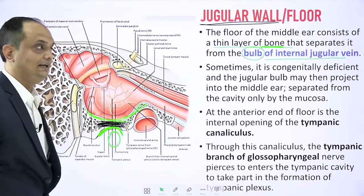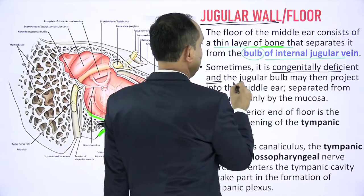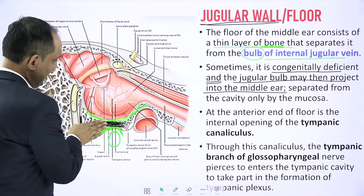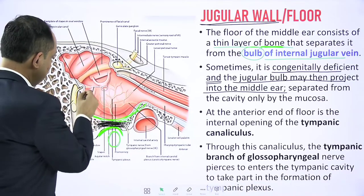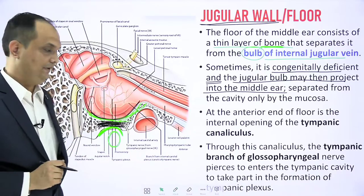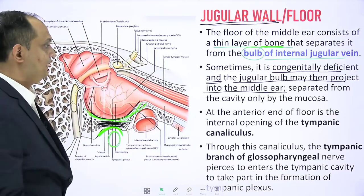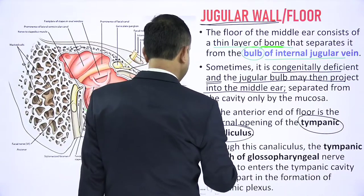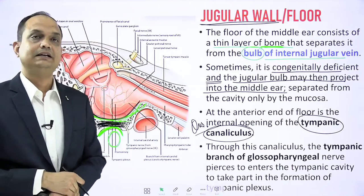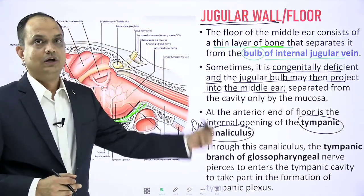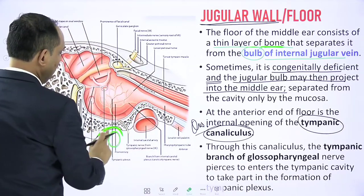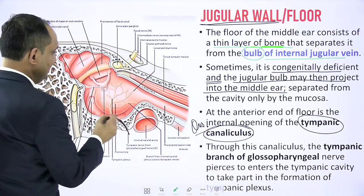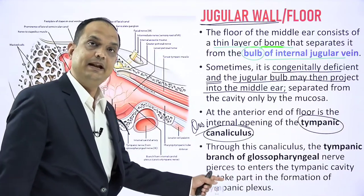Importantly, this bony plate is sometimes congenitally deficient, and the jugular bulb may then project into the middle ear separated from the cavity only by the mucosa. So if the bone is absent, only the mucosal lining partitions the jugular bulb from the middle ear cavity. At the anterior end of the floor is the internal opening of the tympanic canaliculus — an exam question. The tympanic canaliculus is a feature of the floor with a small opening allowing entry of the tympanic branch of the glossopharyngeal nerve.